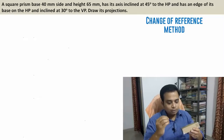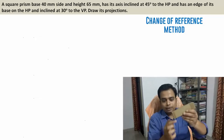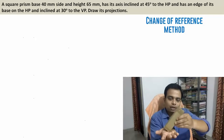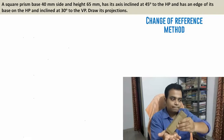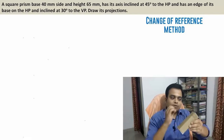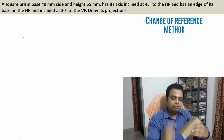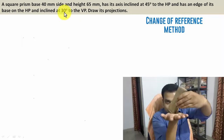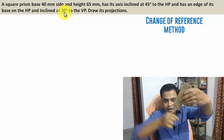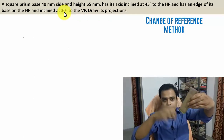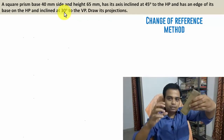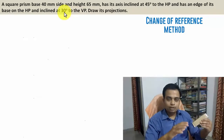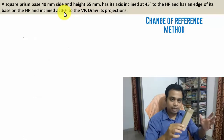It also has an edge of its base on HP, so one of the bases will always remain in absolute contact with the ground — with the HP. At the same time it also makes an angle with the VP: 30 degrees. So the angle made with the VP is going to be equal to 30 degrees, and that can only be seen from the top.